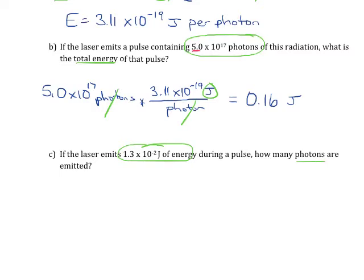So starting with what we know, 1.3 times 10 to the negative 2 joules of energy, and we know that every one photon has 3.11 times 10 to the negative 19 joules of energy.